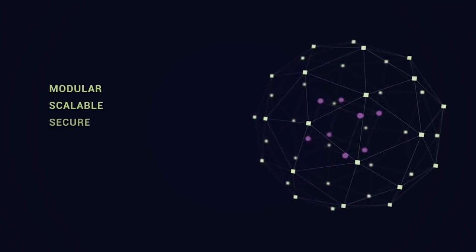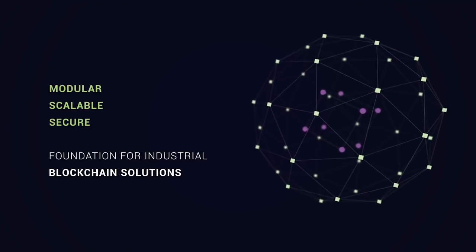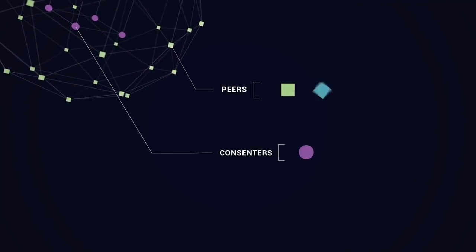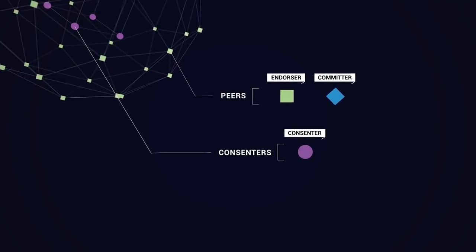The most notable change is that peers are now decoupled into two separate runtimes with three distinct roles: endorser, committer, and consentor. Here's how it works. Say you run an organic market in California and I grow radishes on my farm in Chile.